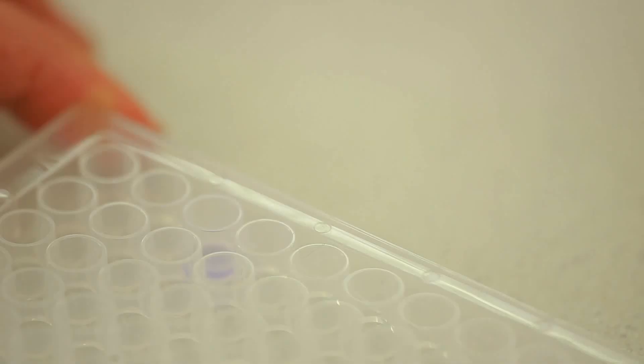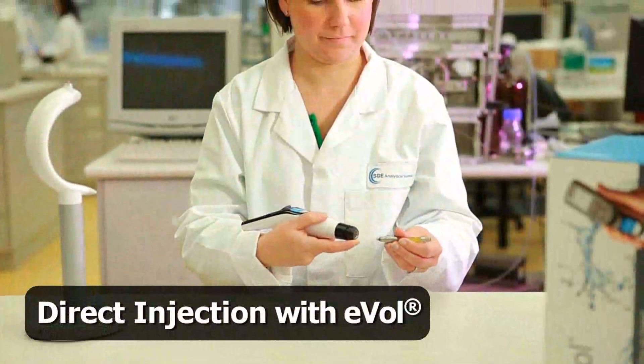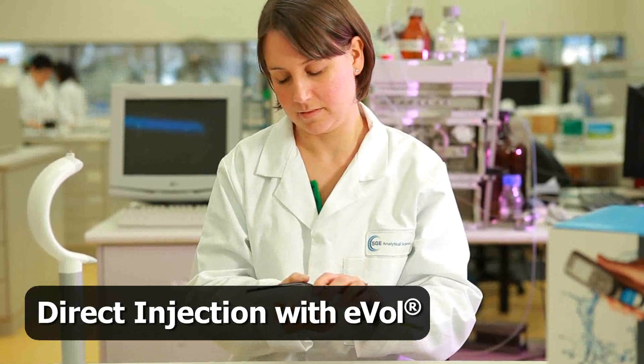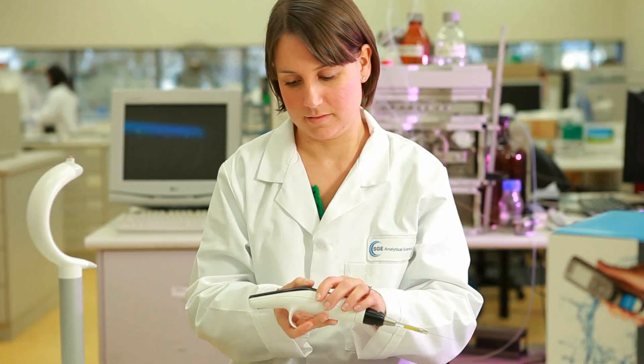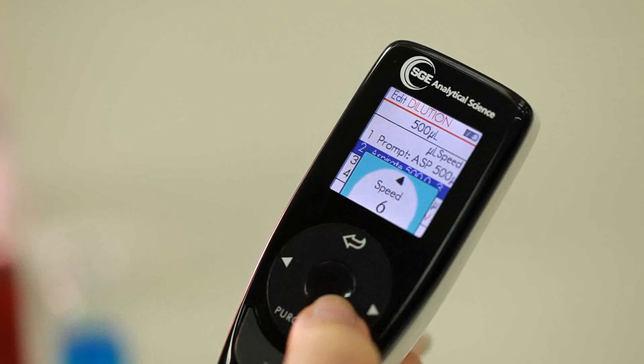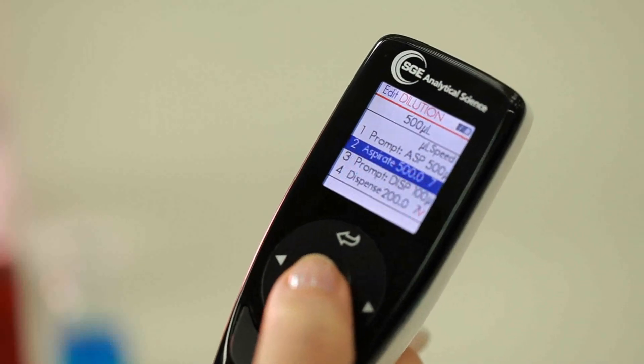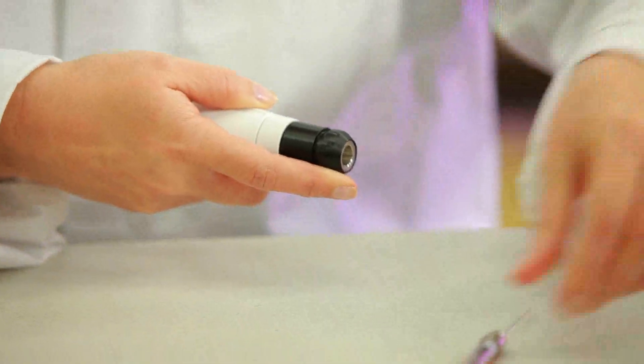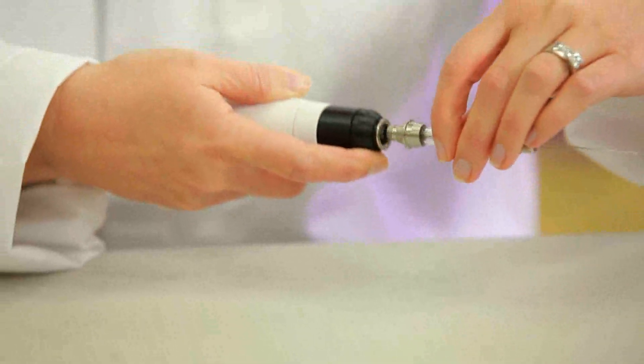Once sample preparation is complete, EVOL stainless steel needles allow direct injection into the required instrument through septa. Depending on the injection requirements, the injection speed can be increased or decreased as necessary. For faster injection speed, increase the size of the syringe to decrease the size of the stroke.